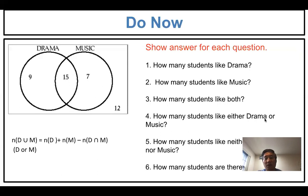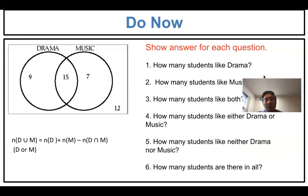How many students like either drama or music? Either drama or music - it could be drama, it could be music, it could be drama and music. So either drama or music: 9, 15, 7. So 9 plus 15 is 24, plus 7 is 31. How many students like neither drama nor music? They don't like anything, so 12 outside of the circle.